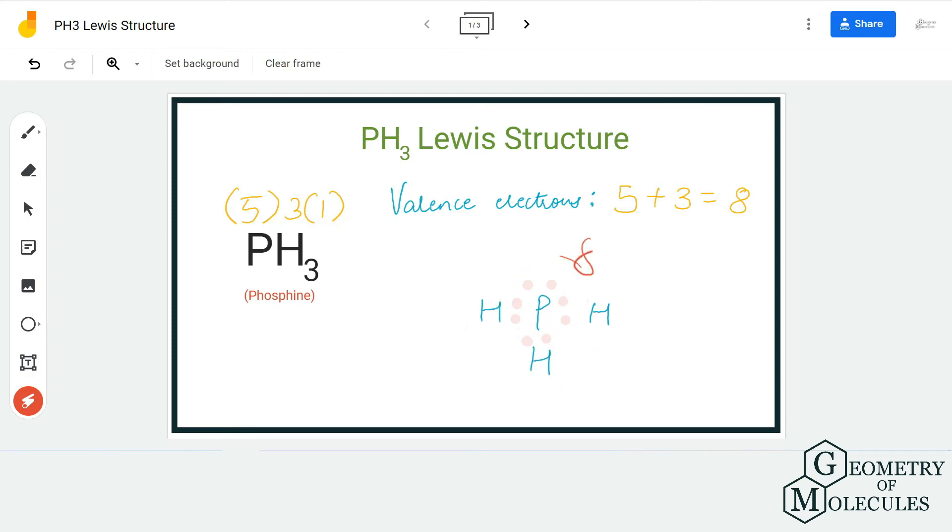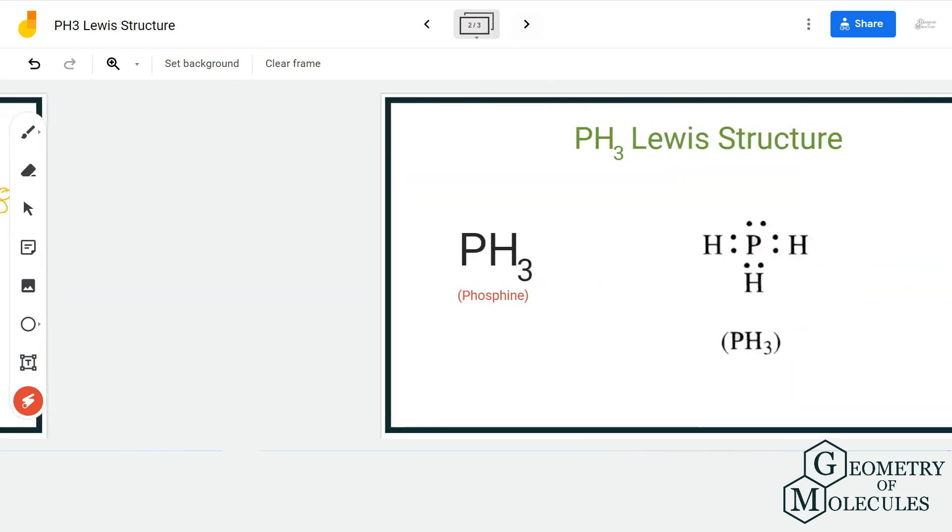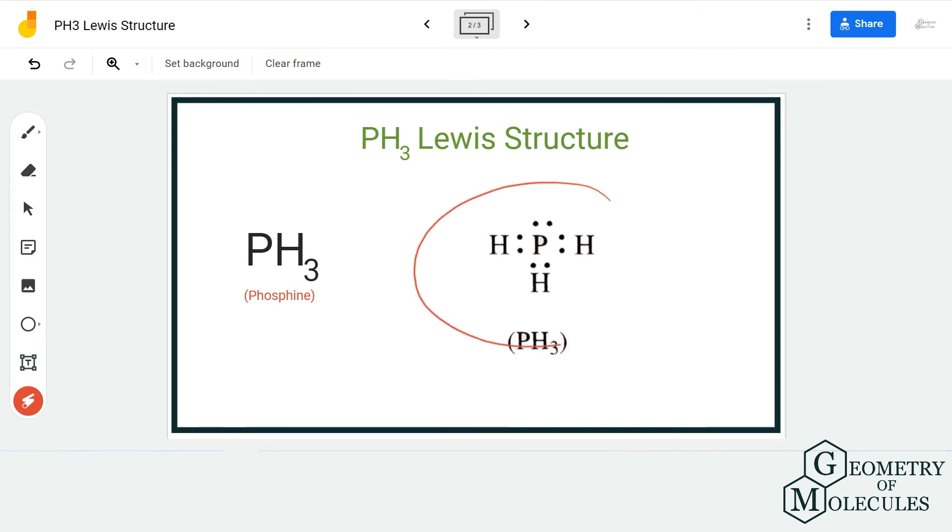Which means it has a complete octet. And as all the atoms have complete octets and have a complete outermost shell, this is the relevant Lewis structure for PH3.